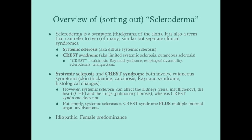Systemic sclerosis and CREST syndrome both involve cutaneous syndromes with skin thickening. With CREST syndrome it's generally limited to the hands, maybe distal arms and feet, whereas with systemic sclerosis it's going to be everywhere — particularly proximal. Both also involve calcinosis, which is deposits of calcium in the skin or connective tissue.